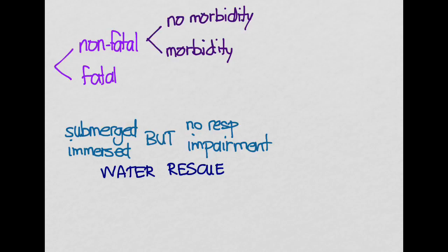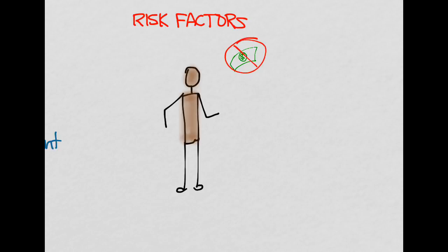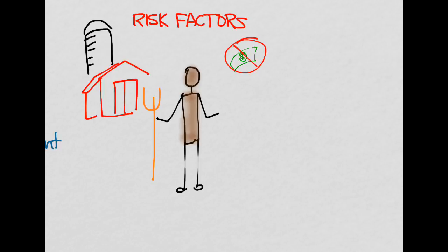Next, let's discuss who is at risk for drowning — what are the risk factors? Let's look at the prototypical drowning victim. Most of them are males, and African-American males are at greater risk, possibly because they don't take swimming lessons as often as other ethnicities. Similarly, lower-income patients and those living in rural areas are at greater risk, presumably because they don't have as much access to swimming pools in order to learn.